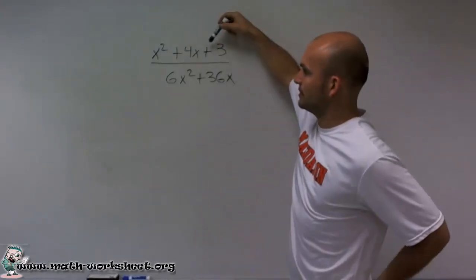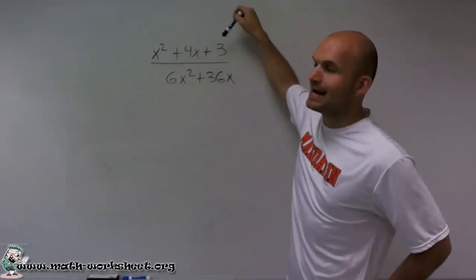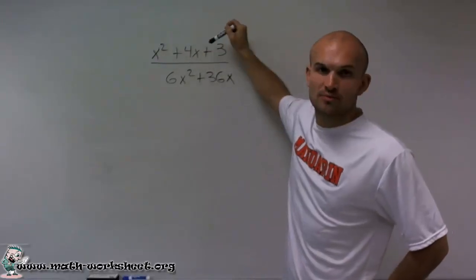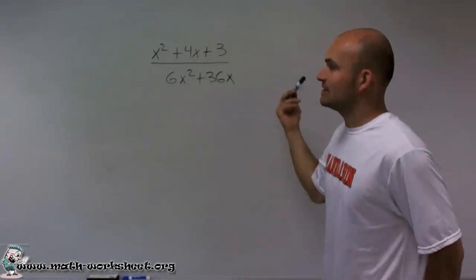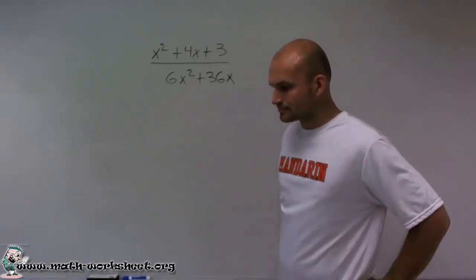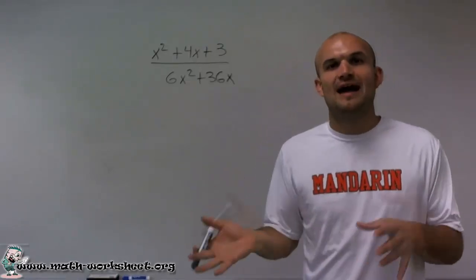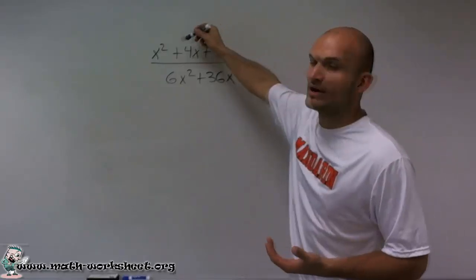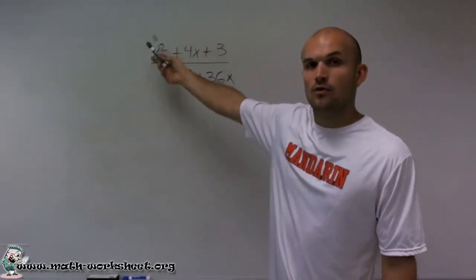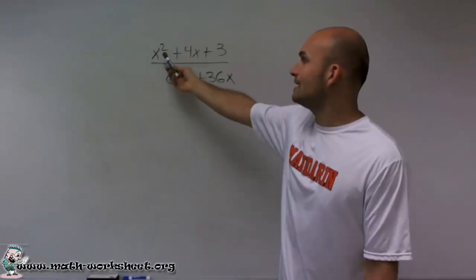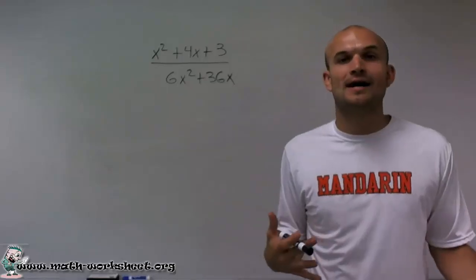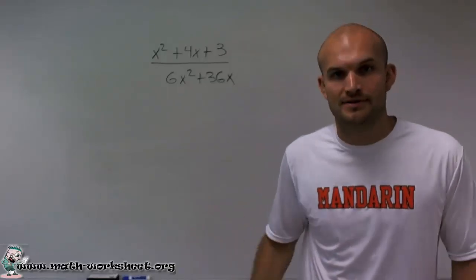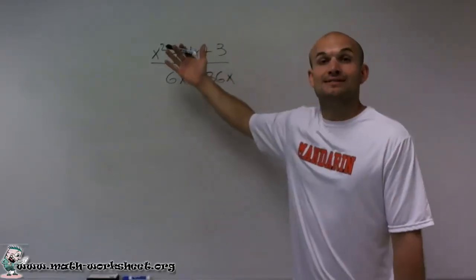So let's look at the numerator. The numerator, they don't share any terms. They don't all share a variable x, nor do they all have a number that's in common that's greater than 1. So since I can't factor anything out that they all share, I can say, is there a way for me to rewrite this in a smaller degree? Rather than writing it as x squared plus 4x plus 3, can I write that as a product of two linear factors? And we'll get to that in just a second.